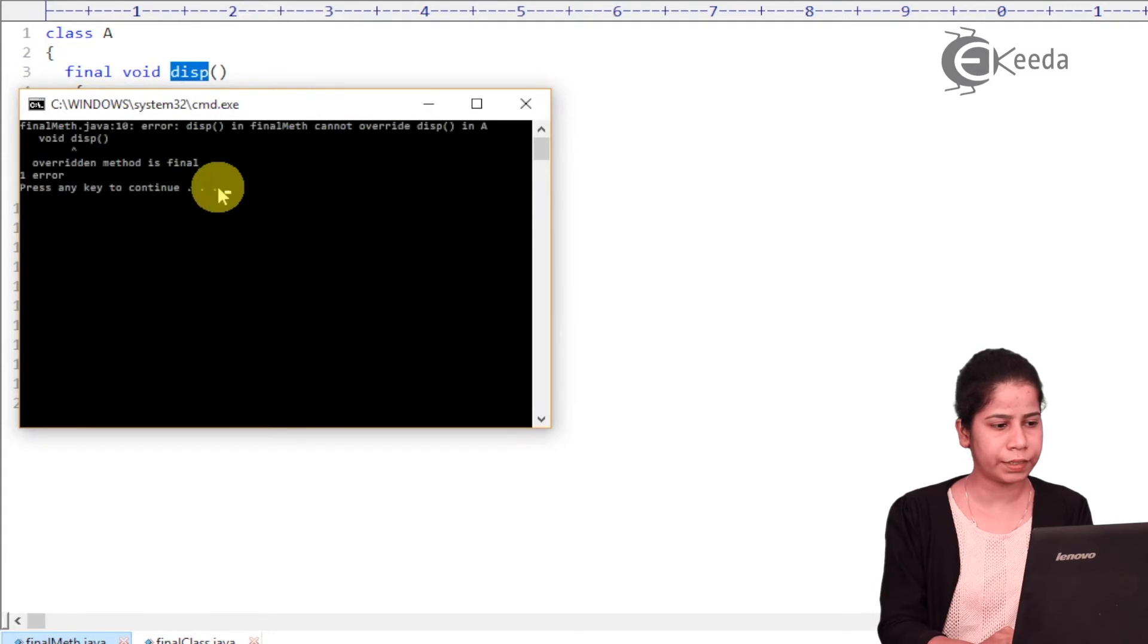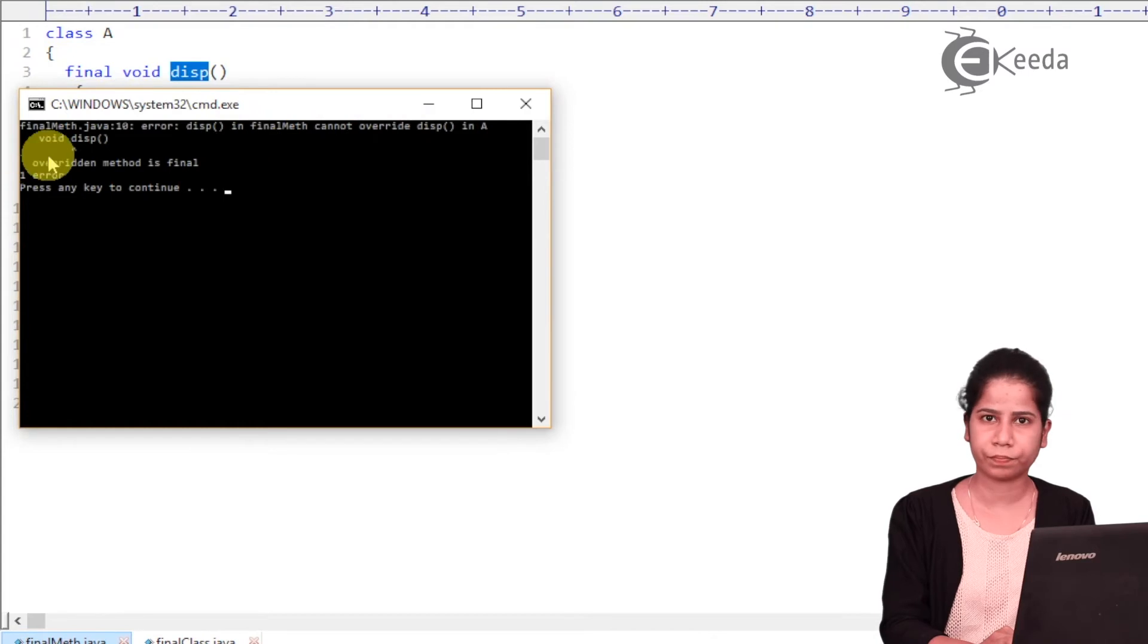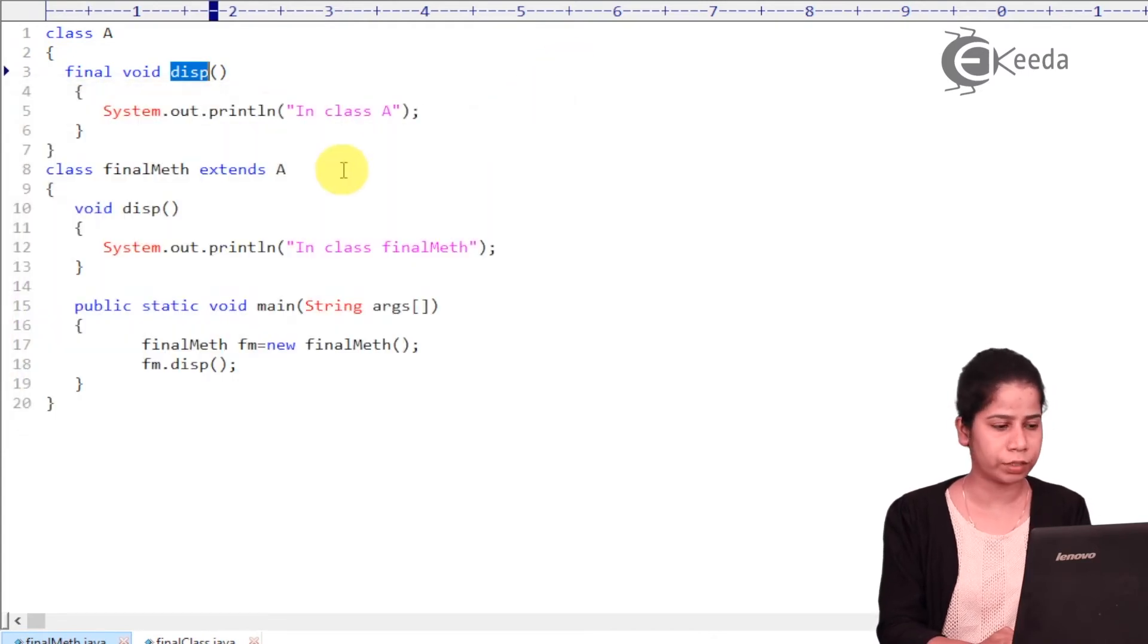So let's try to compile it. So what it is saying, this in final method cannot be override, this in A. So to avoid the overriding, you can use finals.